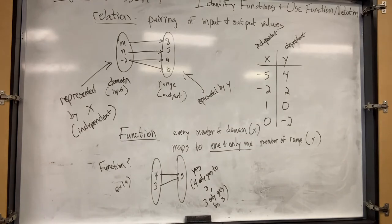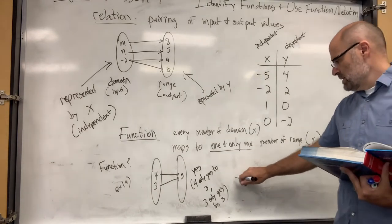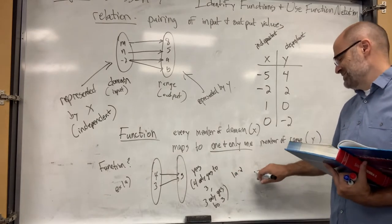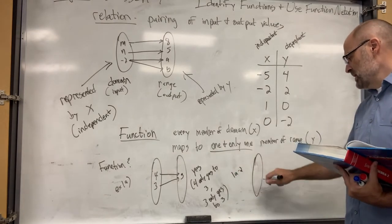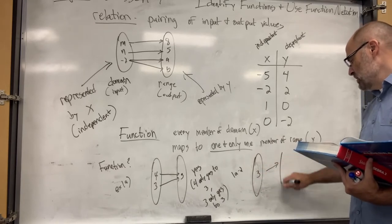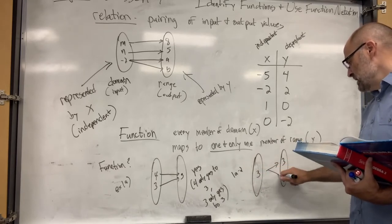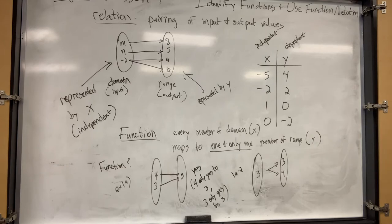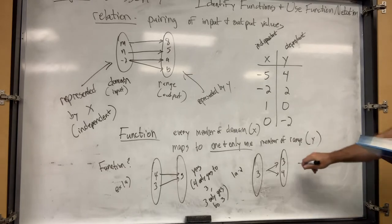What about this? If it was the other way around - 3 goes to both 3 and 4 - is this a function? No, because if you put 3 into the machine, sometimes it goes to 3 and sometimes it goes to 4. That is not functional. So this is no - not a function.